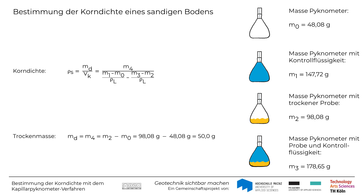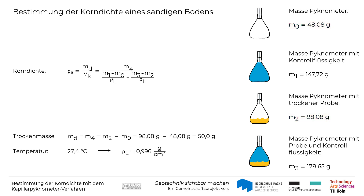Die Trockenmasse Md der Bodenprobe entspricht der Masse M4, welche sich aus M2 minus M0 zu 50,0 g ergibt. Weiterhin wird die Dichte der Kontrollflüssigkeit Rho-L benötigt, die abhängig von der Temperatur der Flüssigkeit ist. In diesem Beispiel beträgt die Temperatur 27,4 Grad Celsius, woraus mithilfe einer Tabelle der Norm die Dichte Rho-L zu 0,996 g pro Kubikzentimeter ermittelt wird.